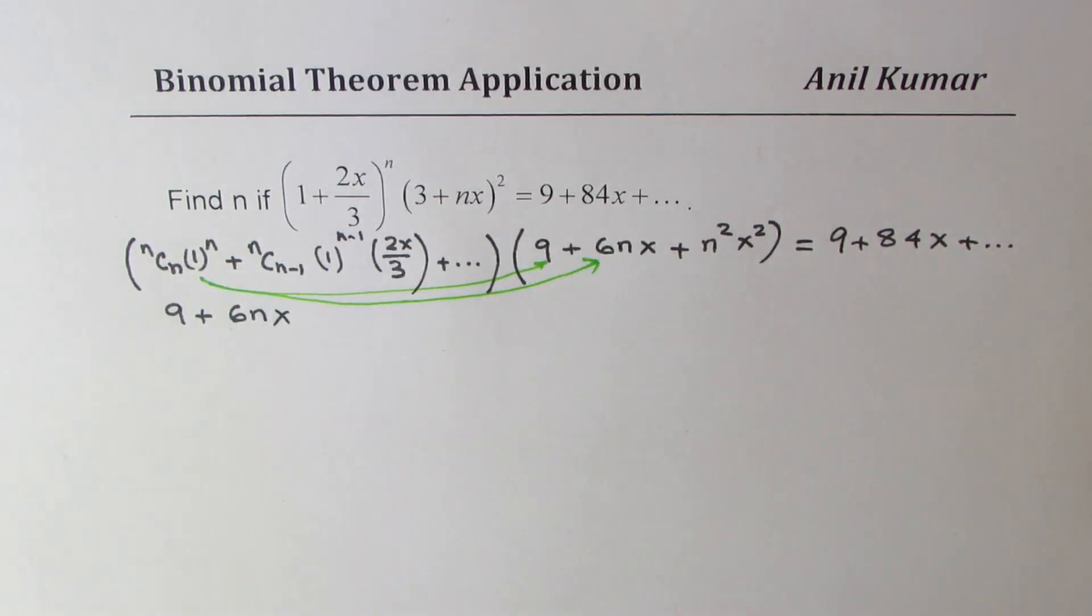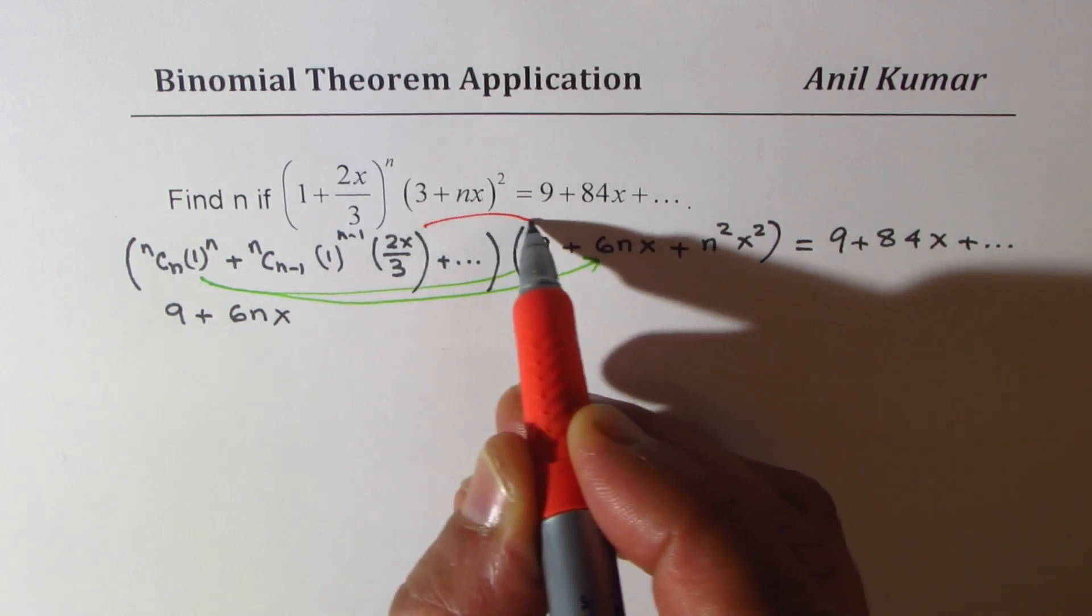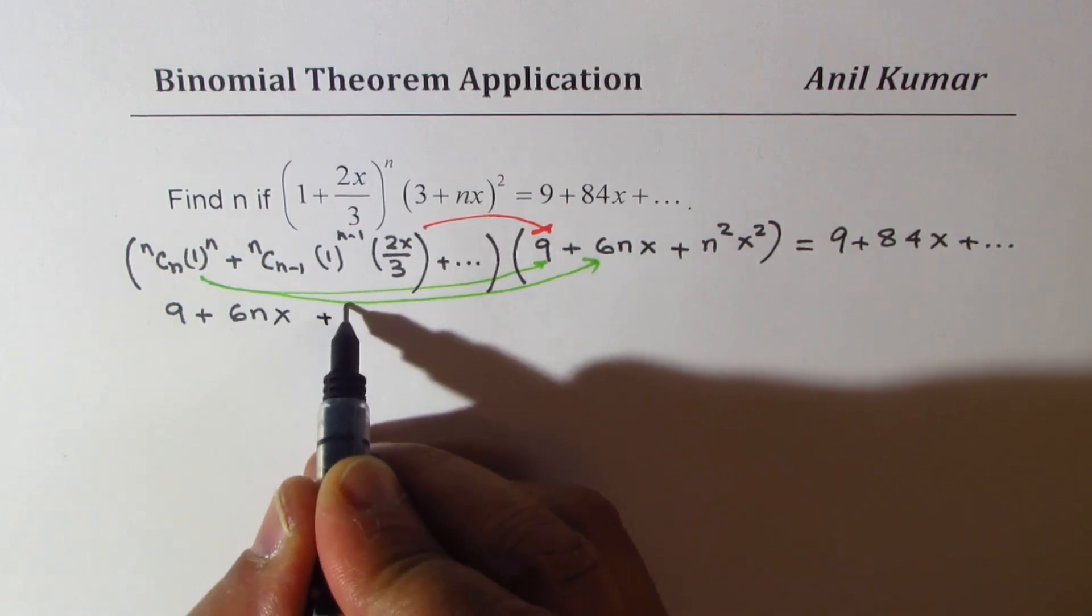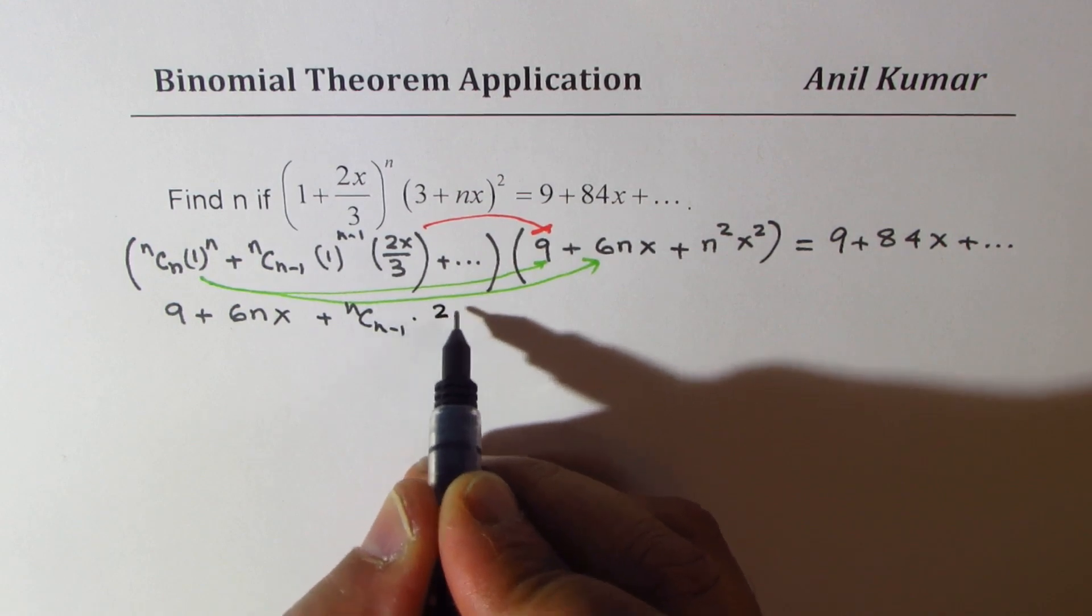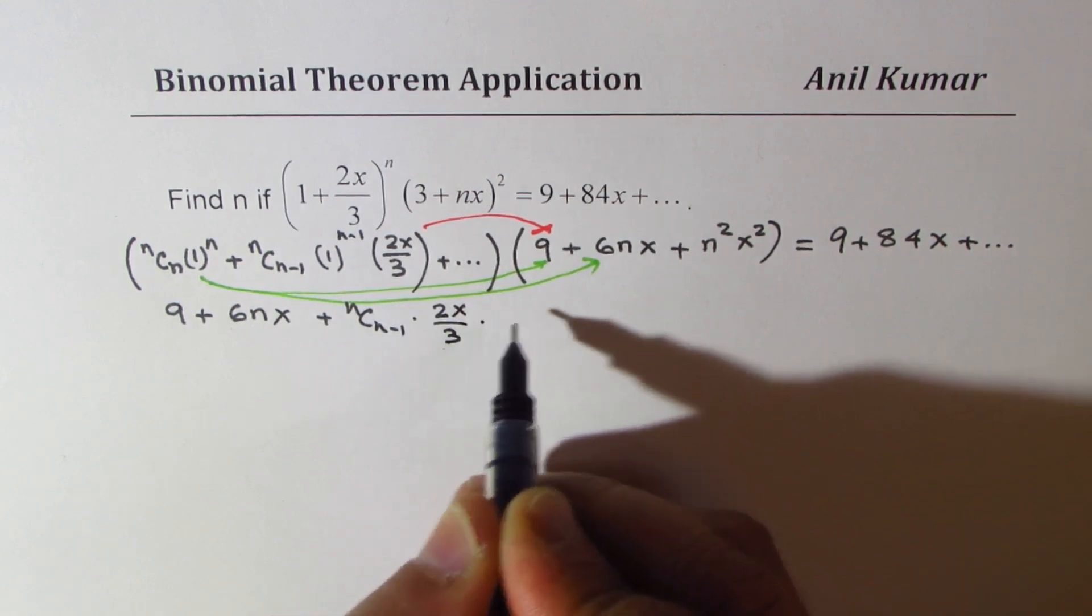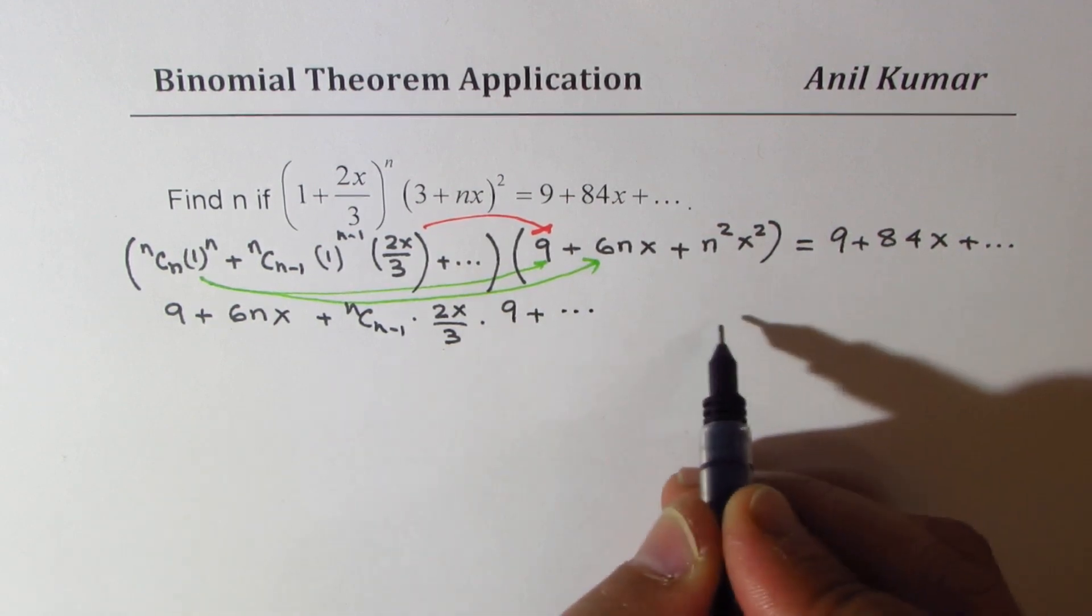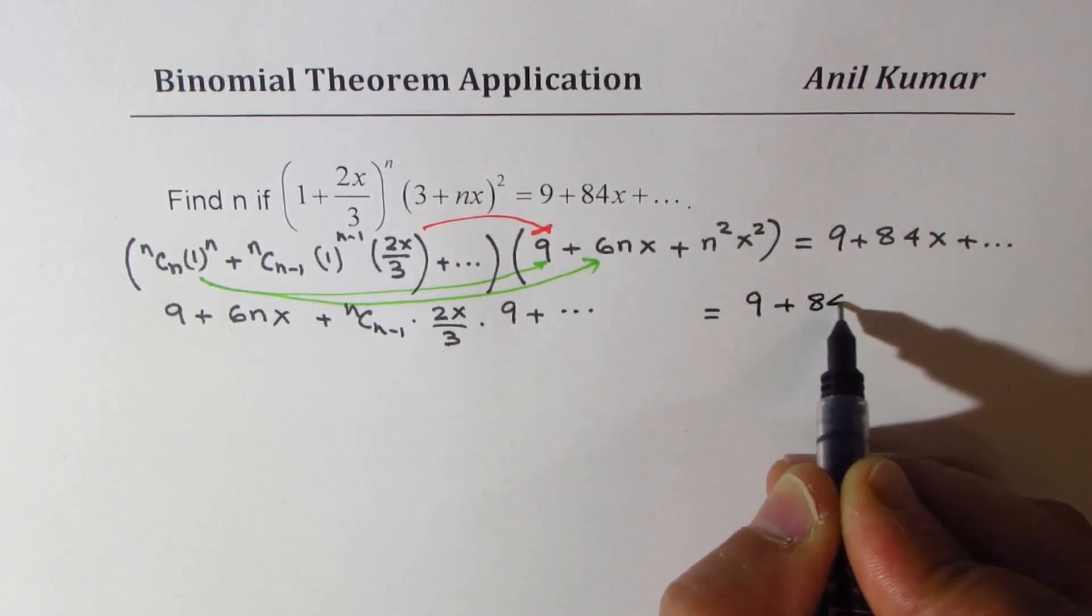And now using this term, which is basically n, we'll multiply this with just 9. So we get plus nC(n-1), that is just n, times 2x over 3 times 9 plus many other terms. All this is equal to 9 plus 84x.